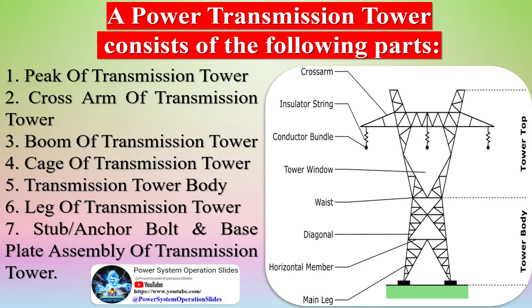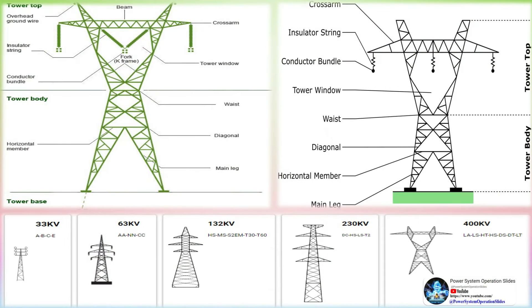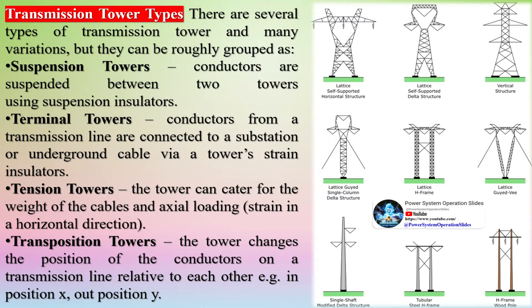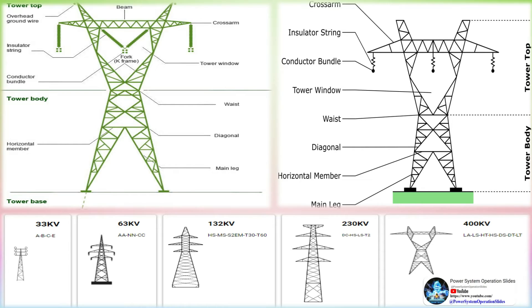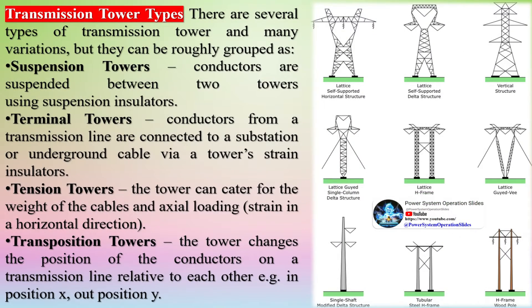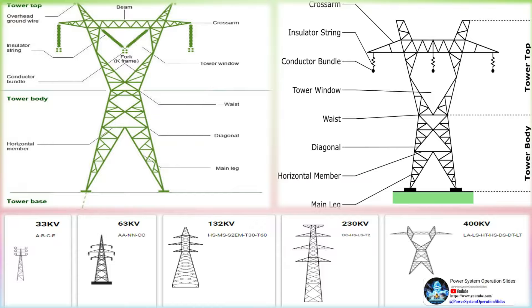There are several types of transmission tower in many variations, but they can be roughly grouped as: suspension towers, where conductors are suspended between two towers using suspension insulators; and terminal towers, where conductors from a transmission line are connected to a substation or underground cable via the tower's strain insulators.